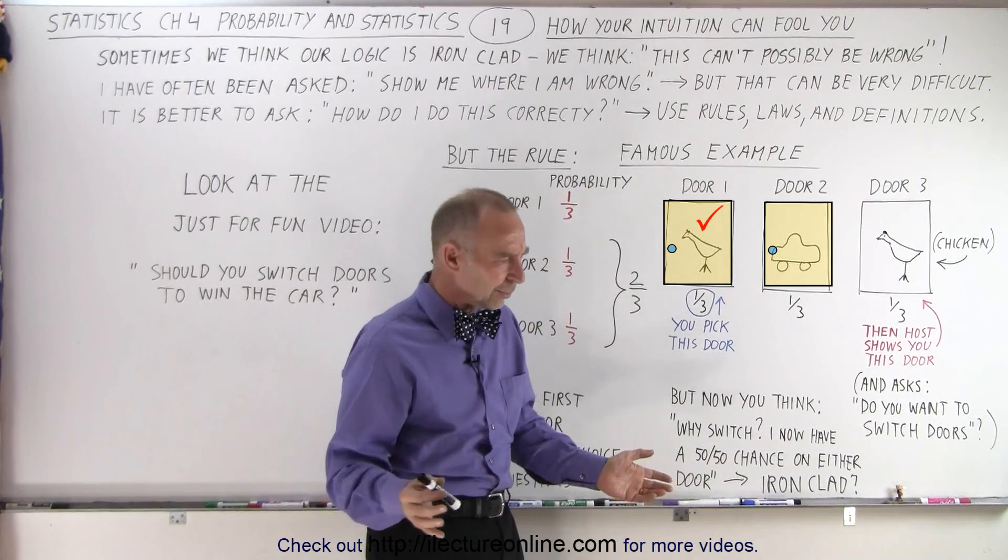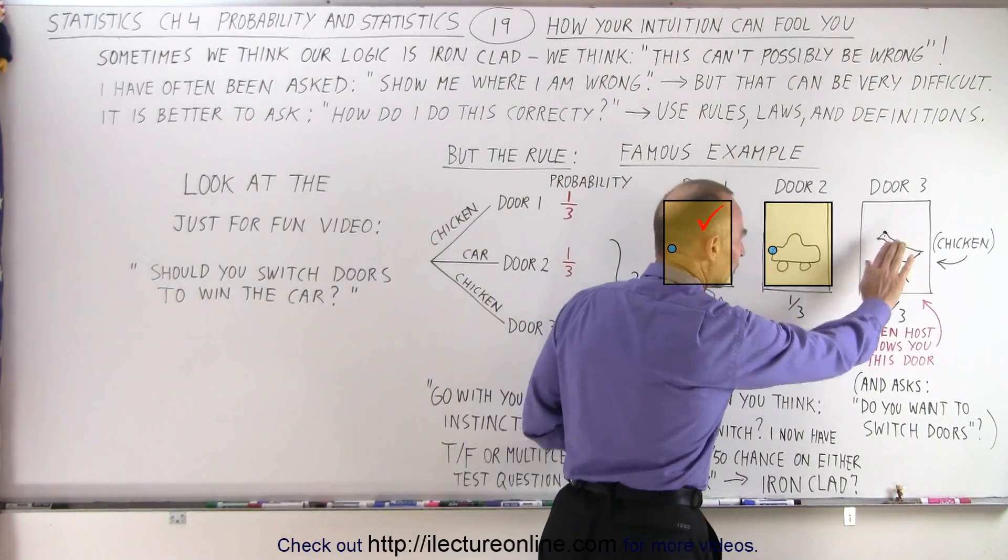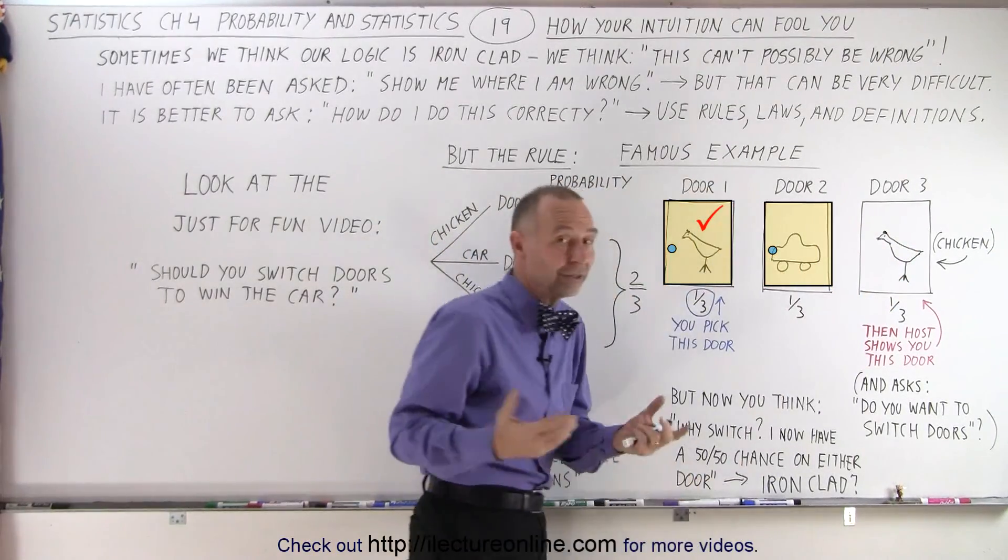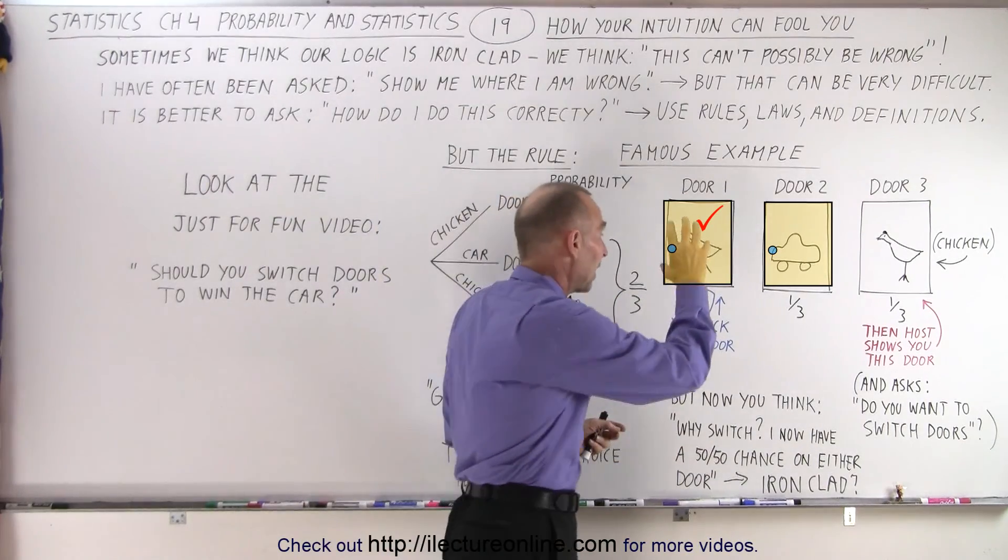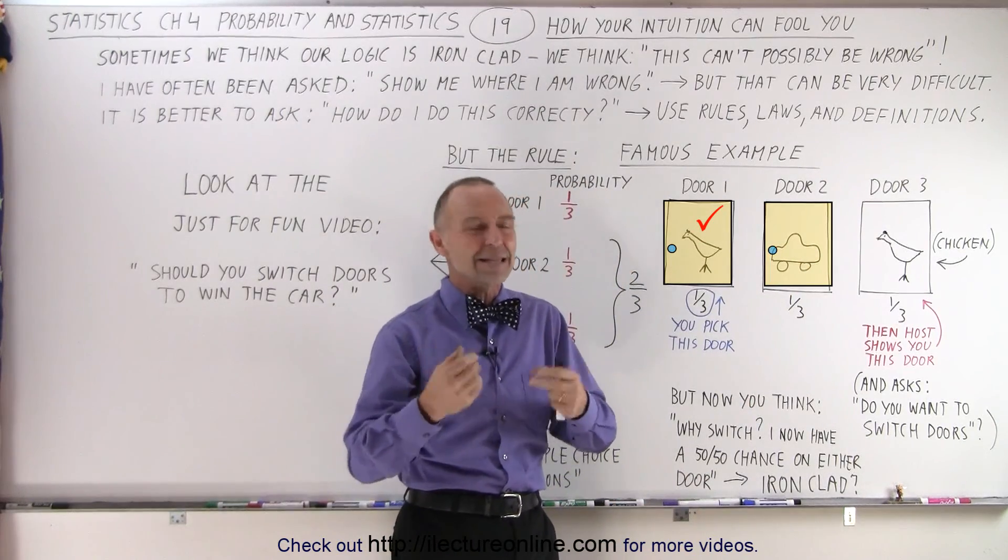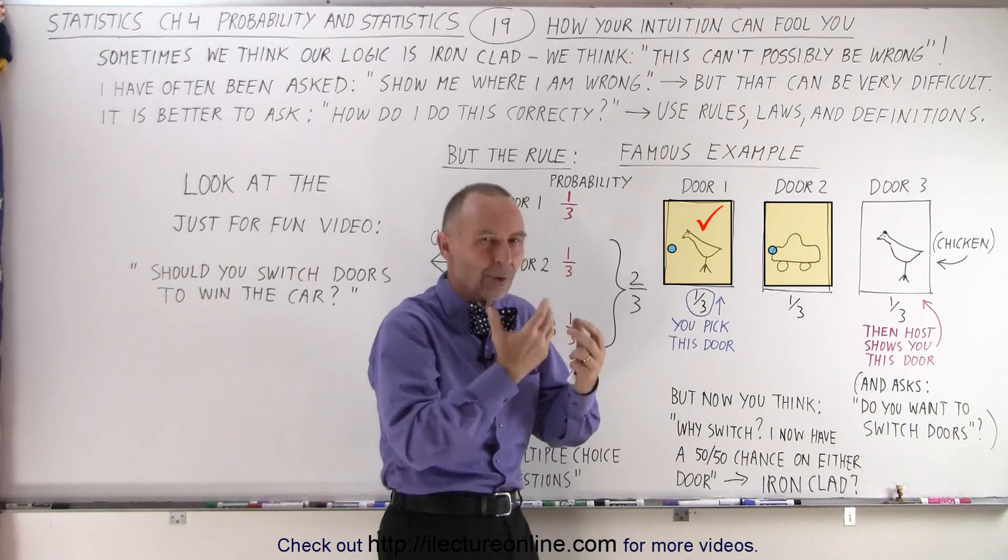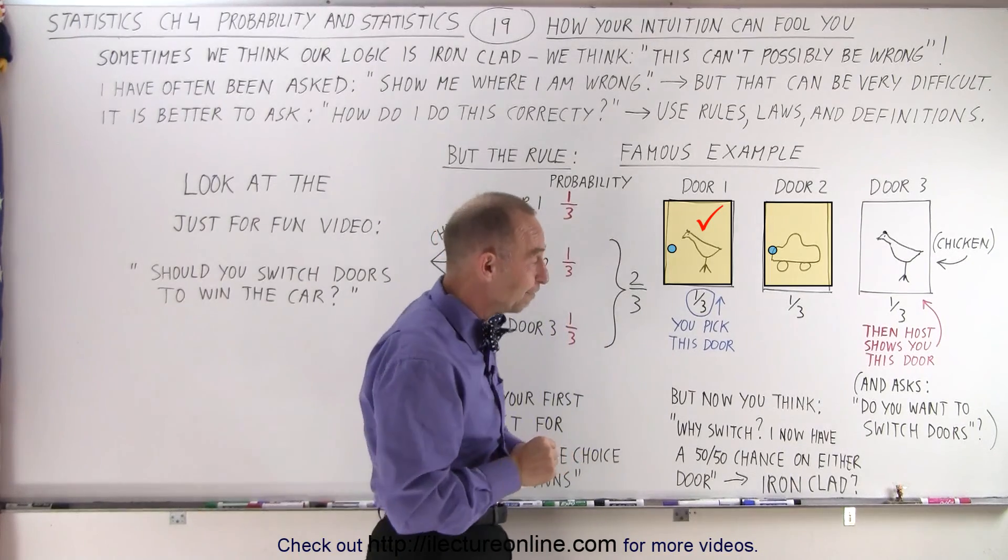And then you think well why should I switch? Once I know the prize isn't behind that door there's only two doors left, so therefore now I have a 50-50 chance that the prize will be behind this door or the prize will be behind that door. That seems logical and that's the key. It seems so logical. What would be wrong with that concept? A lot of people are fooled by that.